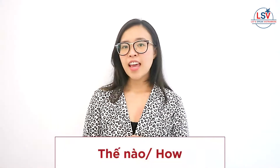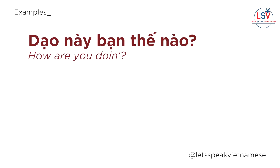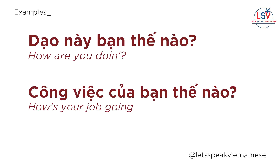Next we have thế nào, meaning 'how.' Remember, do not say the 'T' too strongly — say both the T and H sounds, with the H a bit stronger: thế nào. For example: dạo này bạn thế nào? and công việc của bạn thế nào?